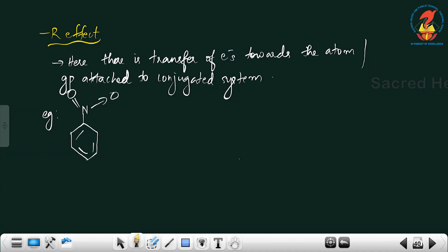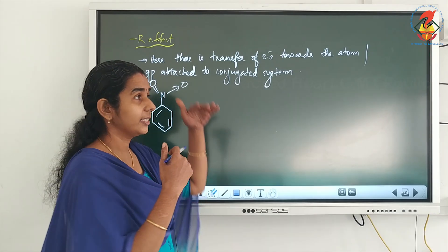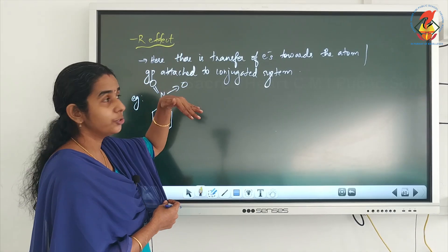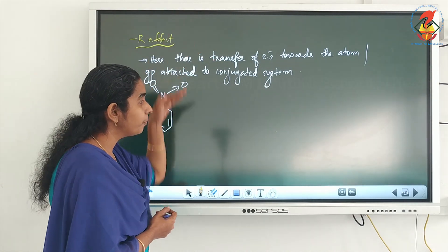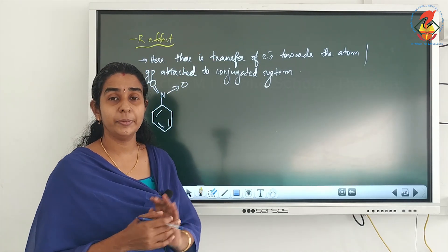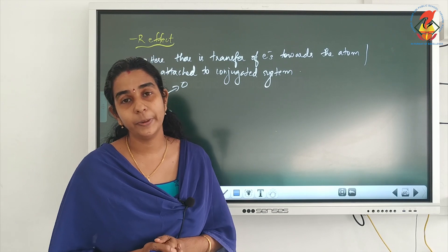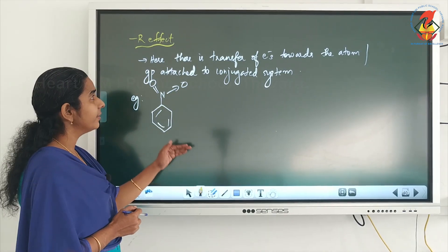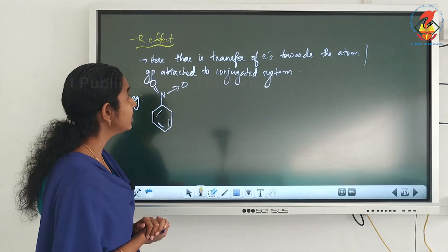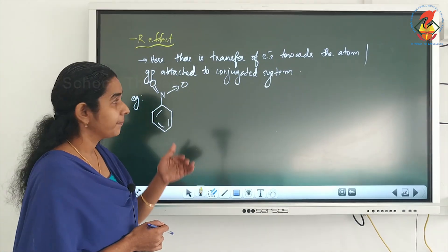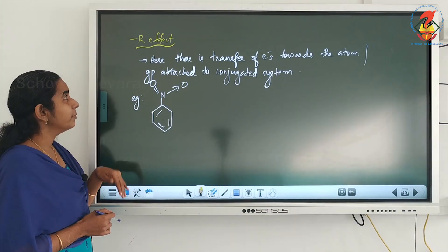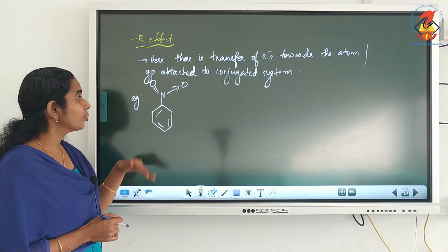Now the last one is the minus R effect or negative resonance effect. In positive resonance, there is transfer of electrons away from the group towards the conjugated system. But in minus R effect, there is transfer of electrons towards the atom or group attached to the conjugated system. The best example for a minus R group is nitrobenzene.